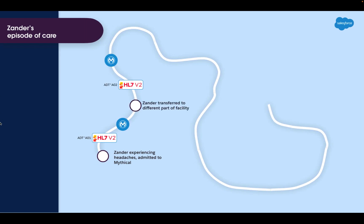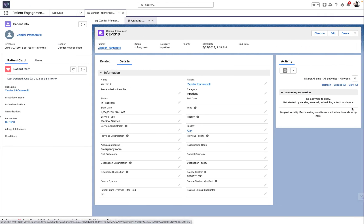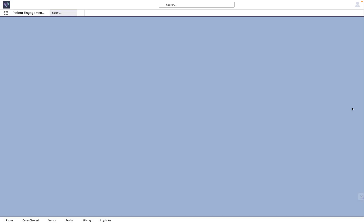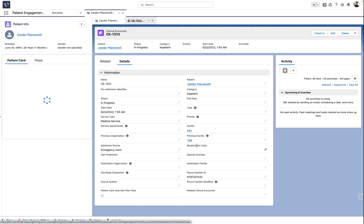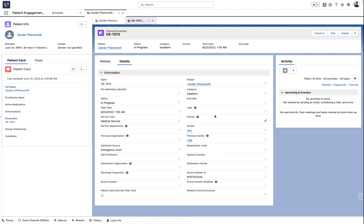Later that evening, Xander is transferred from the Oak building to the Elm building and prepares for his first night in the hospital. When Xander is transferred to a different part of the facility, Mythical's EHR generates an ADT-A02 event, which is processed by the MuleSoft application and updates his location within the Clinical Encounter in Salesforce. Returning back to Salesforce and refreshing the page, you'll now notice that the previous facility is updated to Oak and his current facility is now reflected as the Elm building.